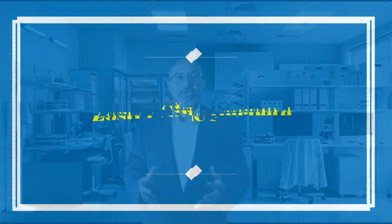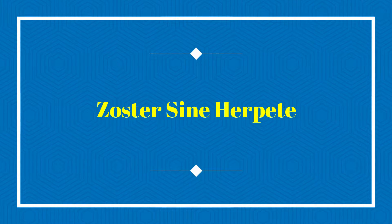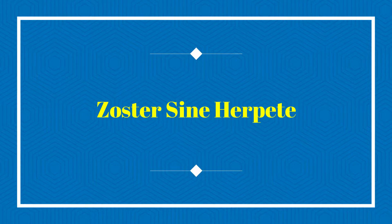People with herpes zoster can spread the rash, but the early flat rash and the crusted lesions are not contagious. In some cases there is pain but a rash never appears, in a syndrome known as zoster sine herpete. Reactivation of the virus most frequently occurs in people over the age of 60, because as we age our cellular immunity weakens.